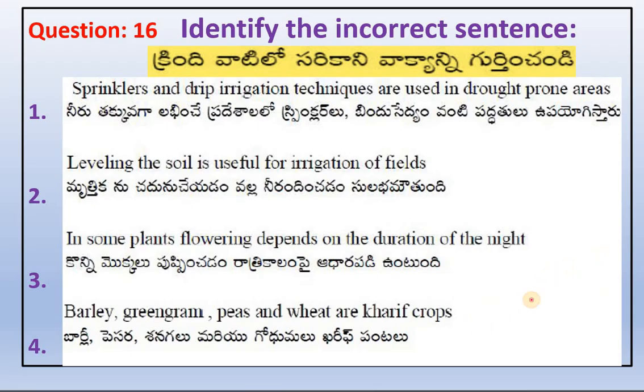Identify the incorrect sentence. Fourth option: barley, green gram, peas, and wheat are Kharif crops — this is the incorrect sentence.